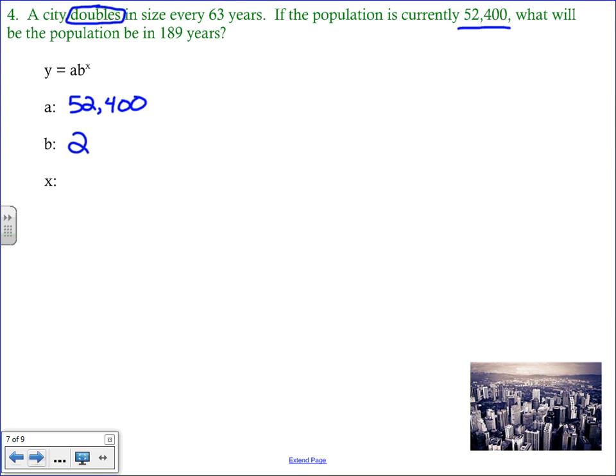And now we have to figure out how many doubling periods have there been. And so what I would do here is I would say, okay, well, if we have 189 years, how many times does 63 actually go into 189? So we can divide. We could take 189 divided by 63. That gives us 3. Another way to look at this is you could just start listing it out. You can say, okay, it's going to double after 63 years. So it'll double after 63 years. The next time it's going to double is after 126 years. And then if you add 63 to that, you'll get to 189. So that's another way to calculate that 3.